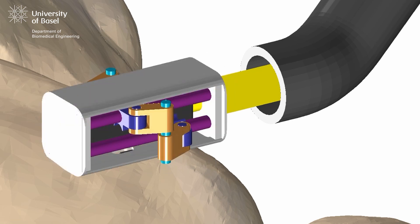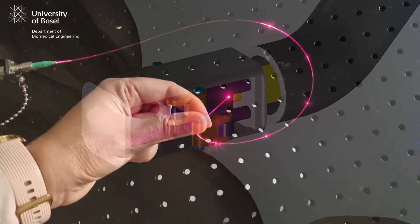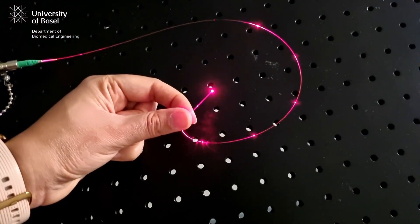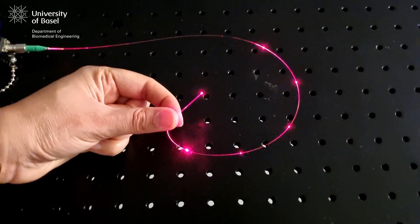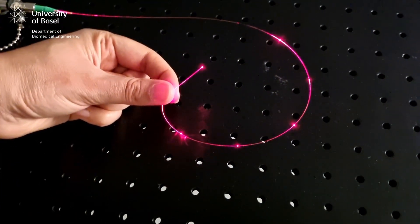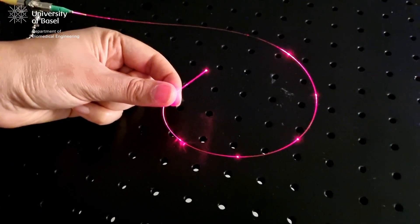A suitable choice for such a delicate task could be fiber-based shape sensors as they are small, bio-compatible, easily replaceable, and immune to electromagnetic interferences.